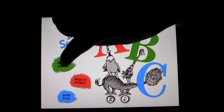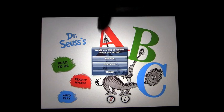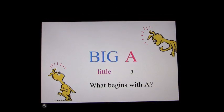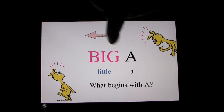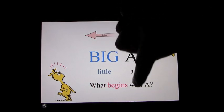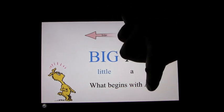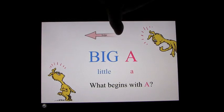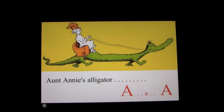Let's click on read to me. We'll do start over. Big A, little a, what begins with A? Aunt Annie's alligator, A, A, A.